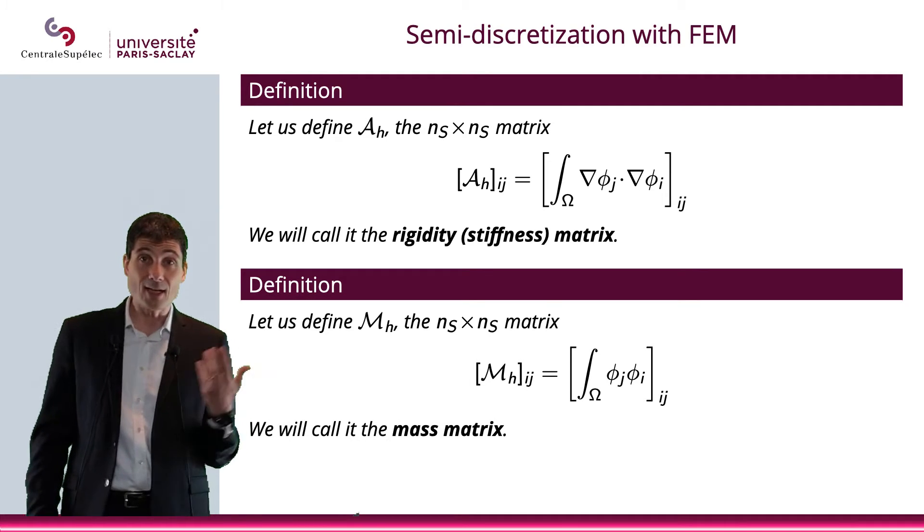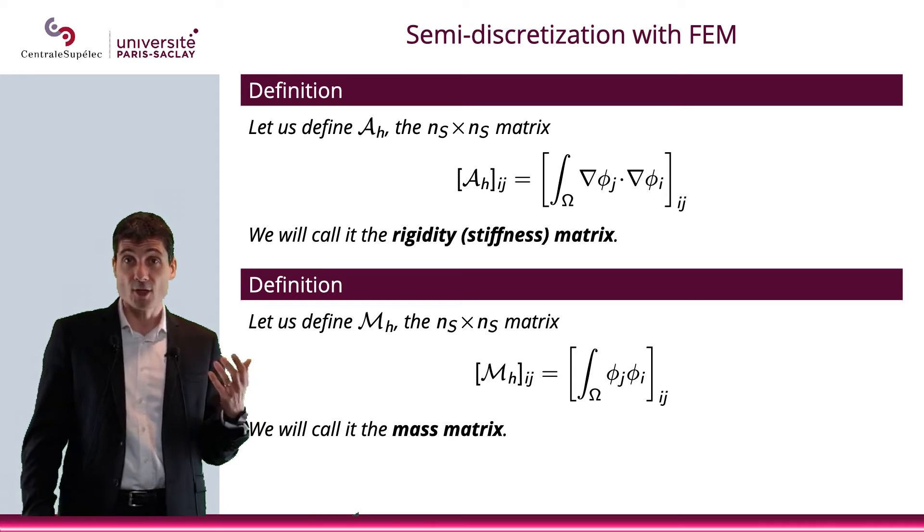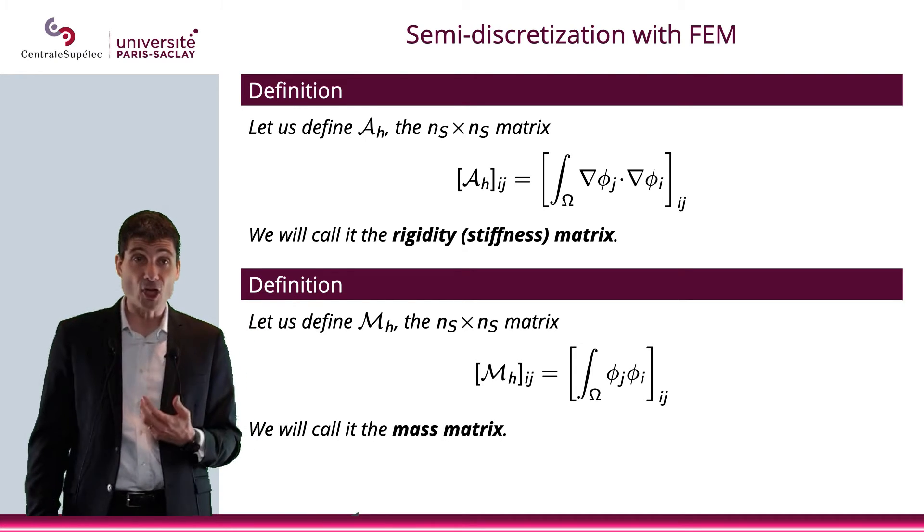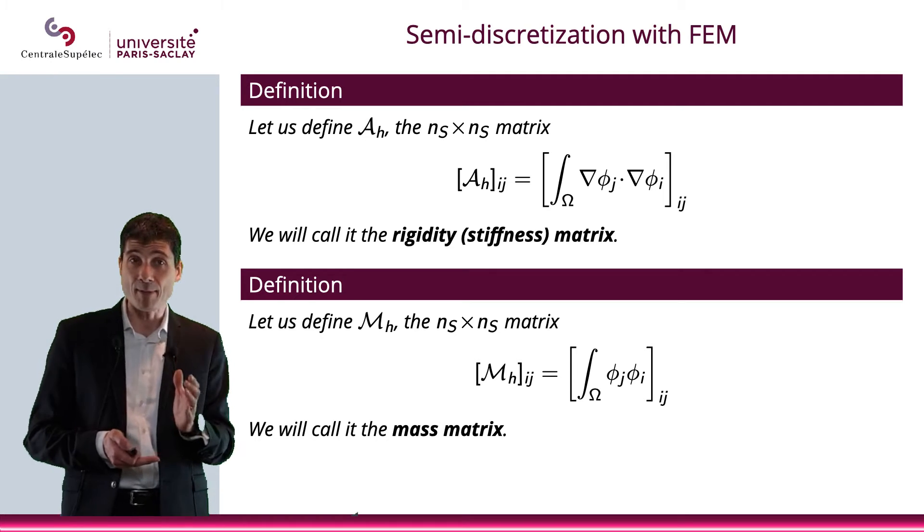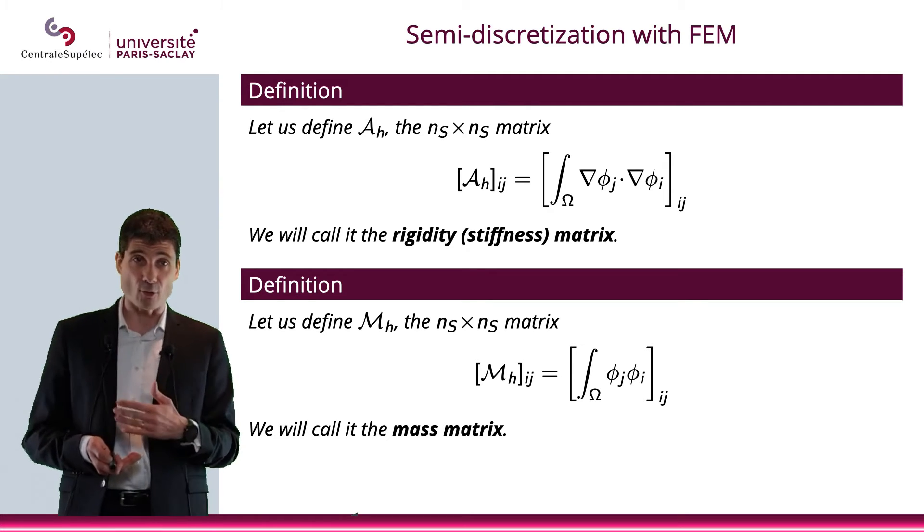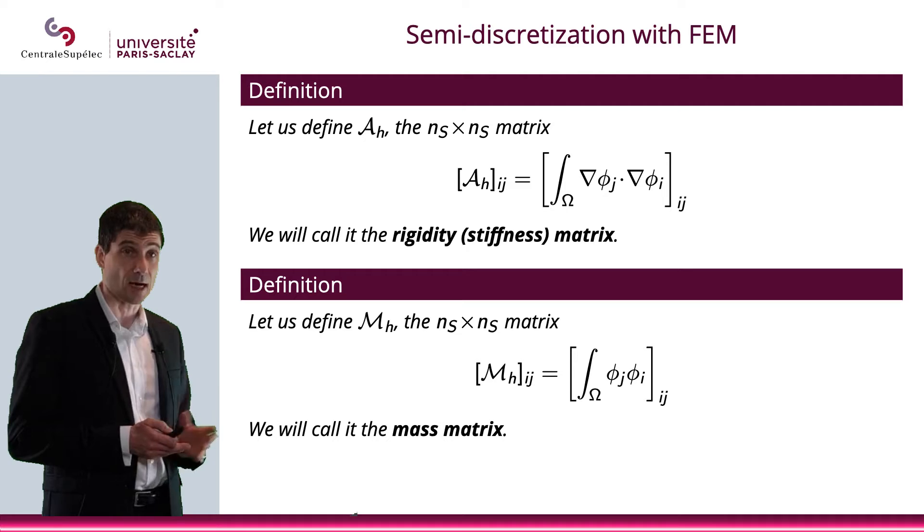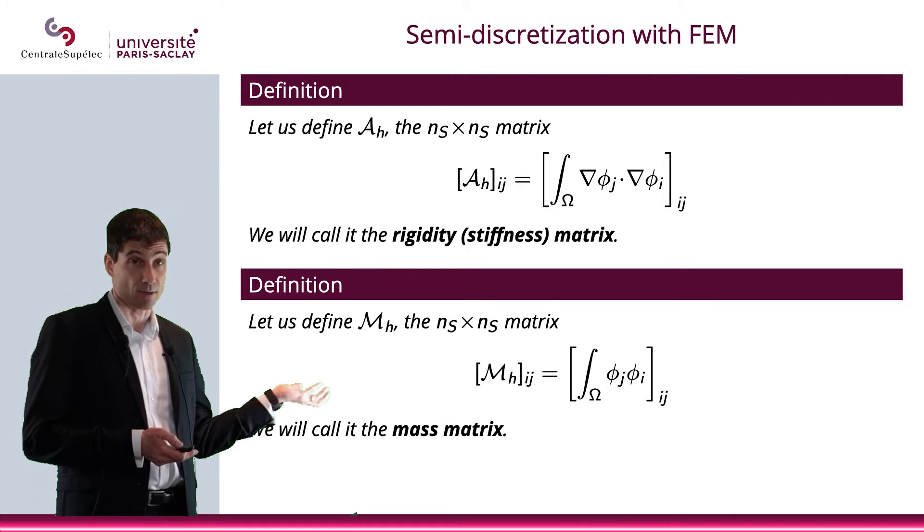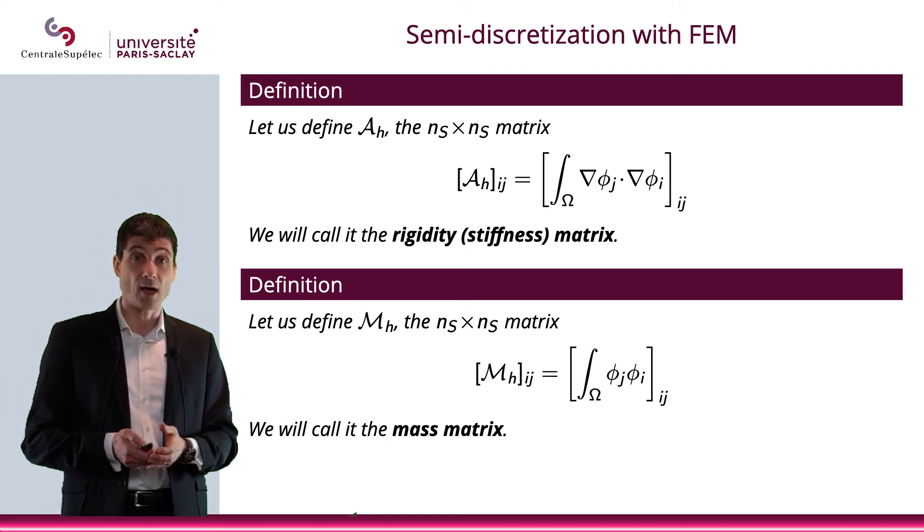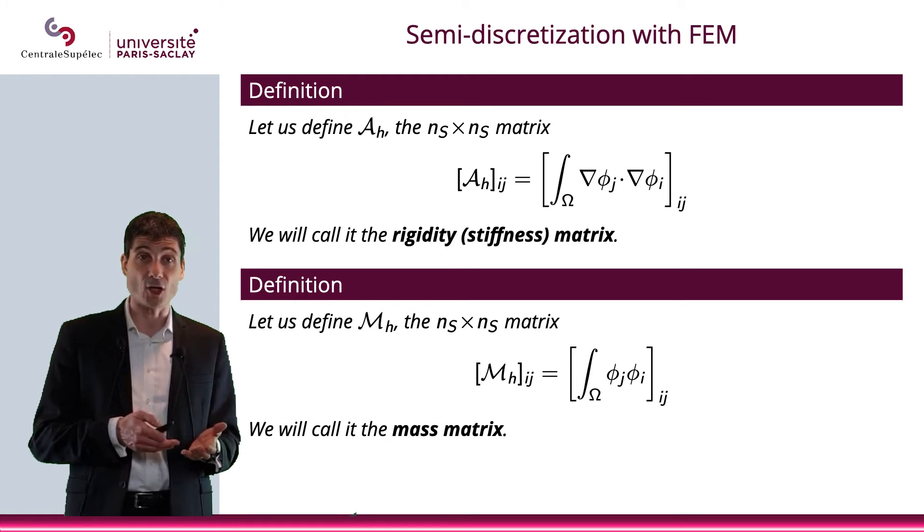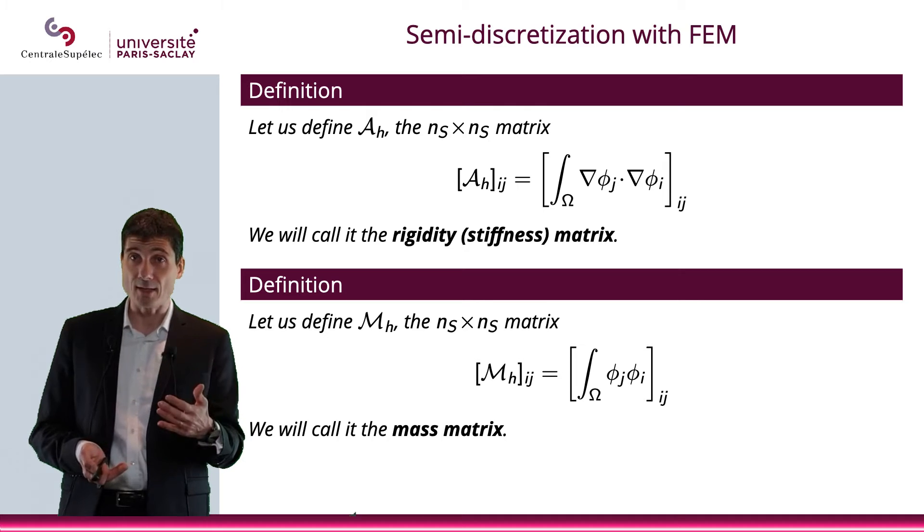But you can see that here we have an additional integral, which is the integral of φ_i φ_j. So we're going to define another matrix that we'll call M, and that we'll call the mass matrix. That will be basically the component ij of this matrix will be the integral over omega of φ_j φ_i. And it's called the mass matrix.